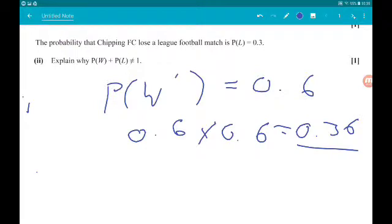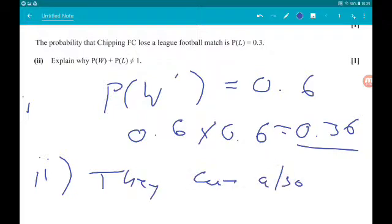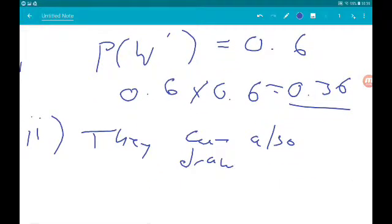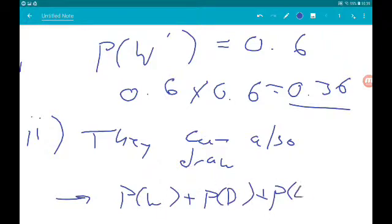So we've already said that really. We can say that they can also draw. So that means probability of win and the probability of draw and the probability of lose is equal to 1. Cool.